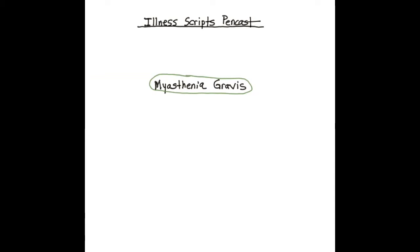When thinking about the ideal patient for myasthenia gravis, one must consider a bimodal distribution. The patient is likely to be younger — a 20-40 year old woman — or an older, 60-80 year old man.